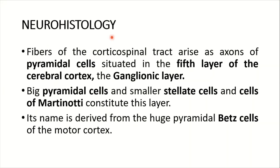Now the neurohistology. Fibers of the corticospinal tract arise as axons of the pyramidal cells situated in the fifth layer of the cerebral cortex, also known as the ganglionic layer or the inner pyramidal layer. Various kinds of cells are present here: the larger pyramidal cells, smaller stellate cells, and cells of Martinotti. The layer's name is derived from the huge pyramidal Betz cells of the motor cortex, and this large bulk of Betz cells contributes to the larger size of the lateral corticospinal tract.